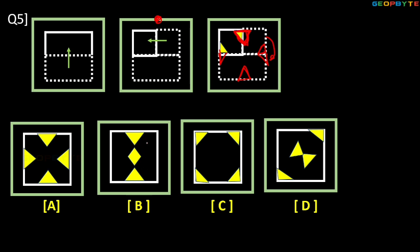By using elimination: in option D, we are getting two punches but here only one punch — so wrong. In the above question, the last figure triangle shape existing — so after open, completed triangle shape existing. But in option C in the middle there is no triangle shape — wrong. Option B also wrong. Clearly option A is the answer.